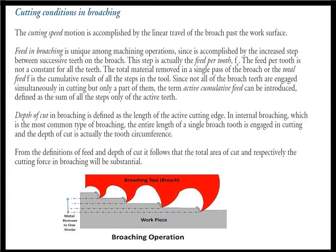The cutting conditions in broaching: three important parameters are common to all metal cutting operations — turning, milling, grinding — and these are cutting speed, feed, and depth of cut. In the case of a broaching operation, the cutting speed is very low, almost 3 to 5 meters per minute, and the motion is accomplished by the linear travel of the broach past or through the work surface.